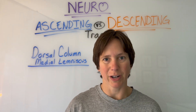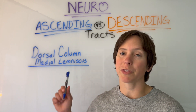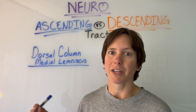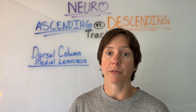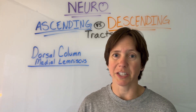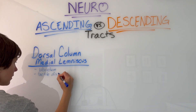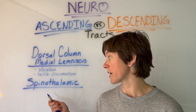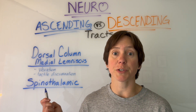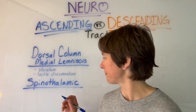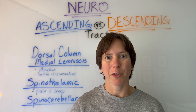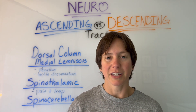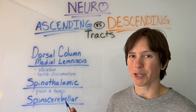The first ascending tract is the dorsal column medial lemniscus tract, known for vibration and tactile discrimination. The second ascending tract is the spinothalamic tract, known for sensing pain and temperature. The third ascending tract is the spinocerebellar tract, which senses proprioception.